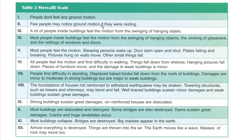What about the higher levels? At level 11, most buildings collapse and are destroyed, and big cracks appear in the earth. At the last level — level 12 — almost everything is destroyed. Things are thrown into the air, the earth moves like a wave, and masses of rock may move too. Even roads are destroyed. That is the last level of the Mercalli scale.